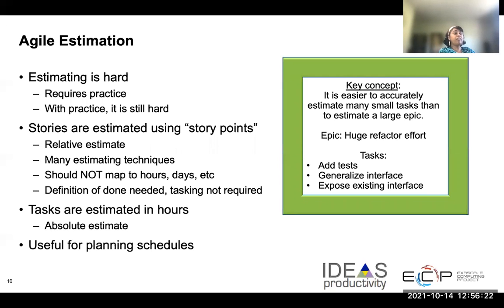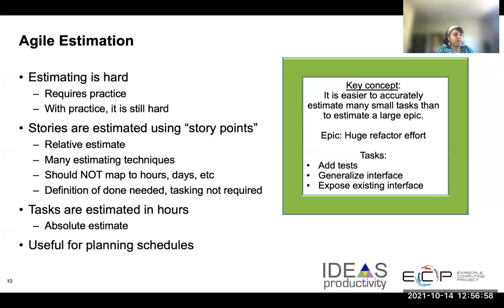Let's talk about something pretty important in Agile: agile estimation. Your ability to estimate how long it will take to complete epics and stories will depend somewhat on the maturity level of your process and how experienced you are at estimating. A significant point about agile estimating is that generally stories aren't estimated in hours — they are estimated using something called story points. A story point is a number that tells the team about the difficulty level of the story.